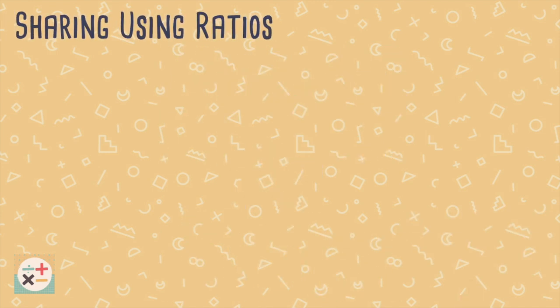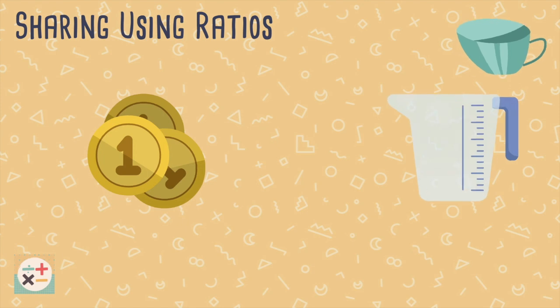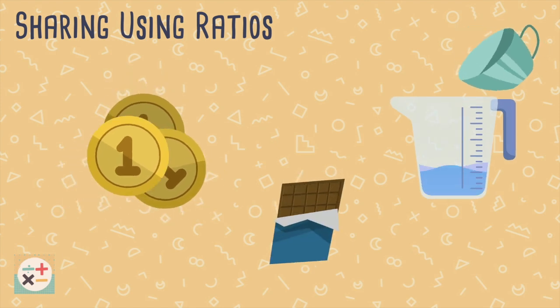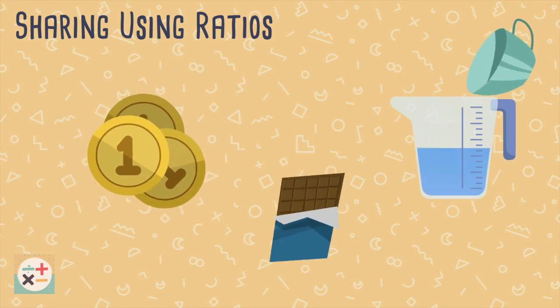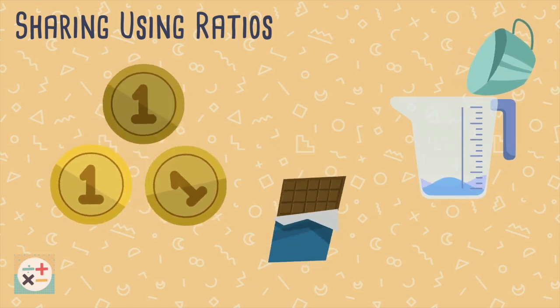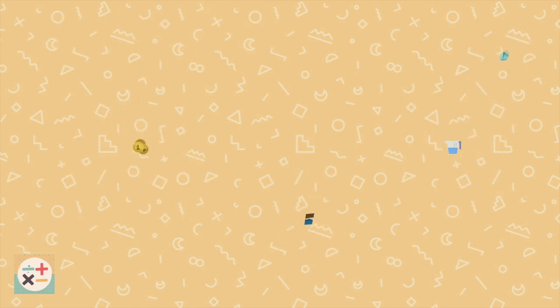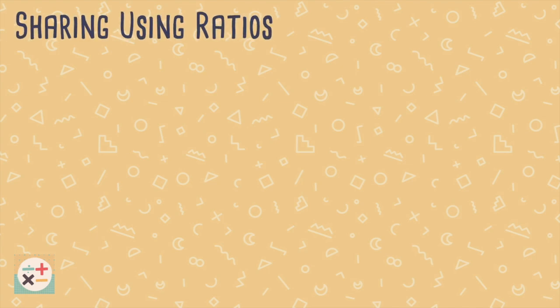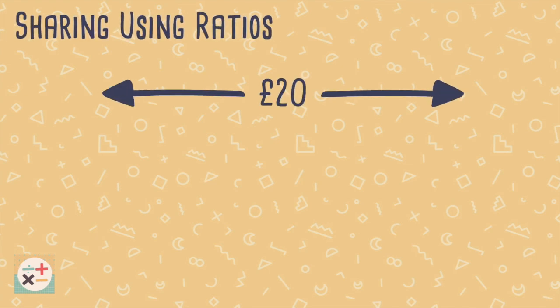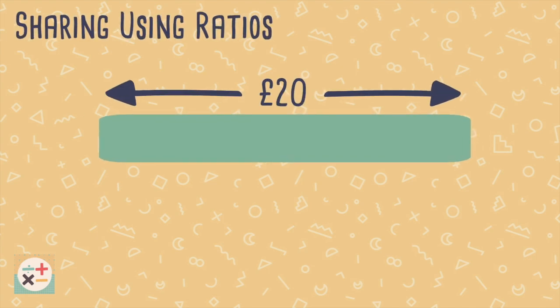Ratios can be used to share quantities such as money or ingredients when cooking. To be able to share in a given ratio, we should think of the amount to share as a whole and each number in the ratio as parts of that whole.